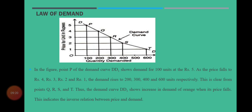Point R show کر رہا ہے کہ قیمت 4 سے کم ہو کر 3 ہو گئی ہے اور لوگوں نے oranges کی demand 200 سے بڑھا کر 300 کر دی ہے۔ اسی طرح point S show کرتا ہے کہ قیمت 3 سے کم ہو کر 2 ہو گئی اور demand 300 سے بڑھ کر 400 ہو گئی ہے۔ Point T show کرتا ہے کہ price 1 پر 600 units demand کیے جا رہے ہیں۔ اگر آپ ان سارے points P، Q، R، S، T کو ملائیں تو ایک curve حاصل ہوگا — یہ curve demand curve کہلاتا ہے۔